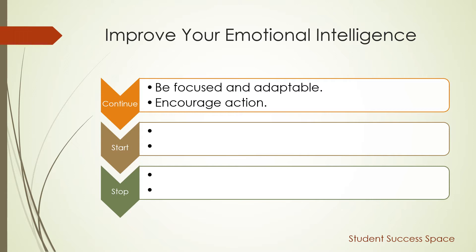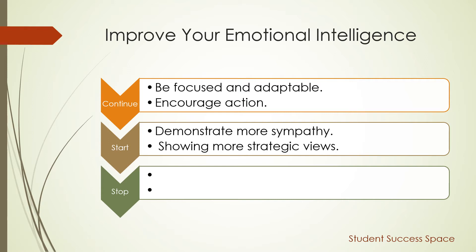Let's look at some things that you can continue to do, start doing, and stop doing to improve your emotional intelligence. First, be adaptable — be a little more focused on what you can do instead of being so quick-paced; slow it down just a little bit. Also, keep encouraging action and completing things in a task-oriented way — you're very good at that, so keep doing that. Something to start doing is showing more sympathy and more empathy to other people, as this is something you lack because you have both the sensing and the thinking preferences.